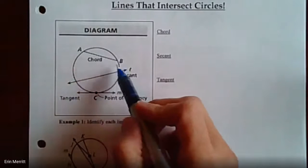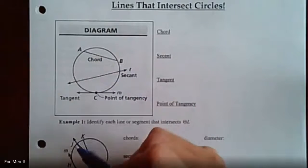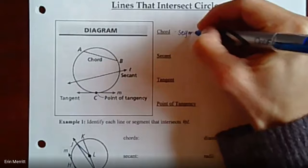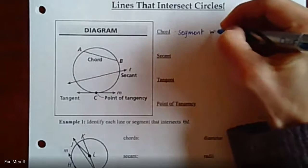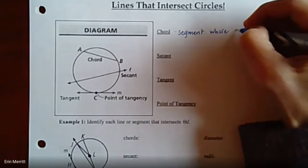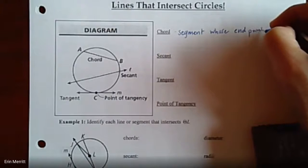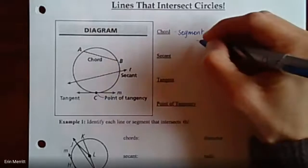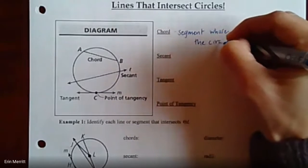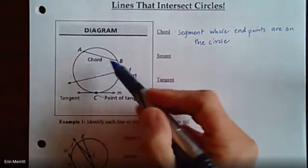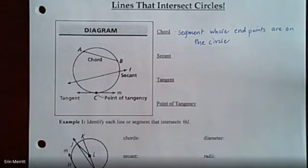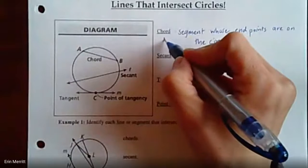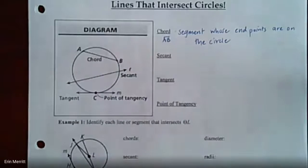The first term is chord. You can see the example drawn and labeled as chord AB. All a chord is is a segment whose endpoints are on the circle — so the endpoints themselves are on the edge of the circle. AB is a perfect example of that.